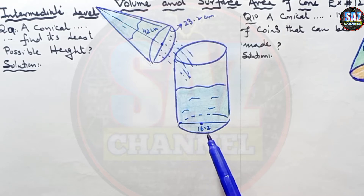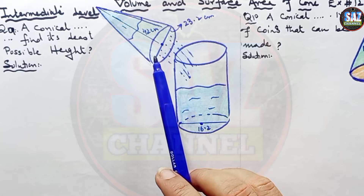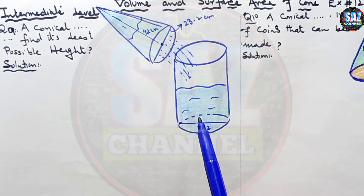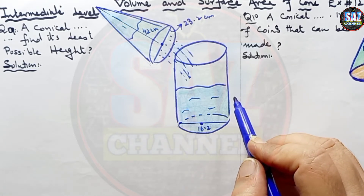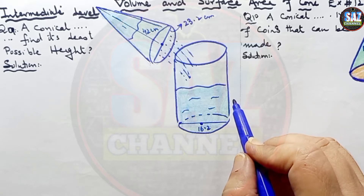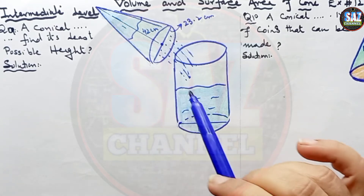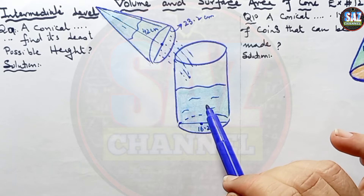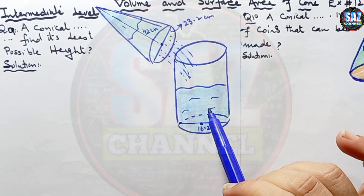The water which was in the cone is being poured out into this cylindrical tin. We have to find the height to which the water level reaches in the cylindrical tin, keeping in mind that whatever water was in the cone, the same volume will be in the cylindrical tin. So, volume of cone will be equal to volume of cylinder.